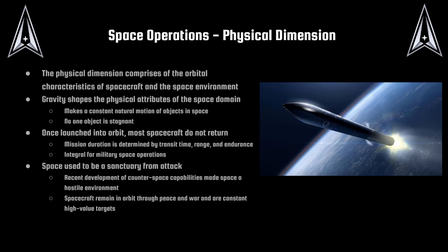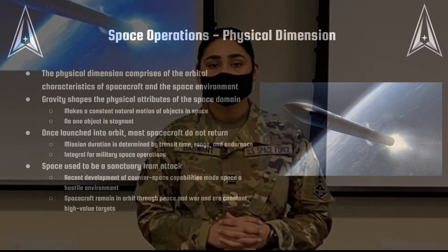Moving into the first dimension of space operations: the physical dimension. This comprises the orbital characteristics of spacecraft and the space environment. Gravity shapes the physical attributes of the space domain, creating constant natural motion of objects in space — no object in space is stagnant. Once launched into orbit, most spacecraft do not return. Mission duration is determined by transit time, range, and endurance, which is critical for military space operations. As Guardians, we must be completely sure that what we put into space is fully equipped to sustain itself and complete its mission.